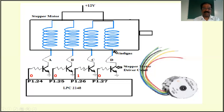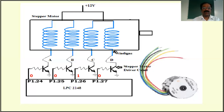Then activate winding C by making the base of this transistor high using P1.26. The other transistors are all off and only this transistor is on. The current starts flowing through this particular winding, creating magnetic flux around the coil. Because of the flux it creates a torque — a twisting force — and it's going to rotate the motor by another 1.8 degrees.